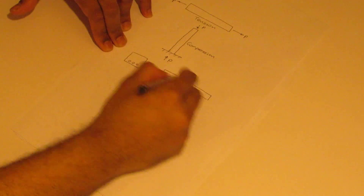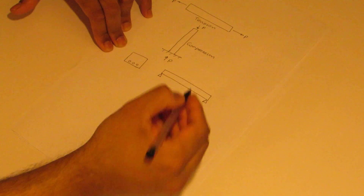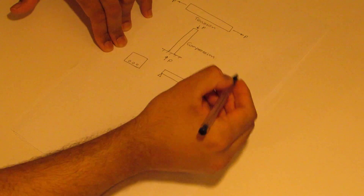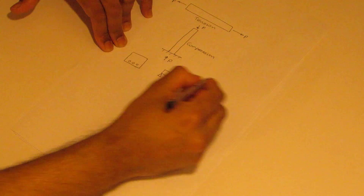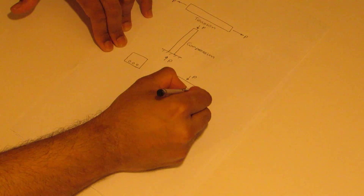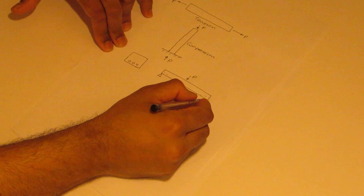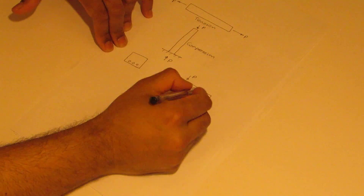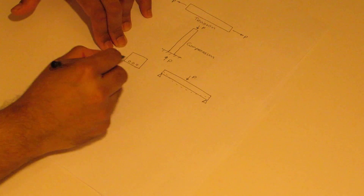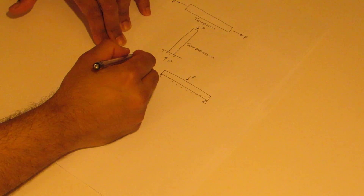If you take a simply supported reinforced concrete beam and you apply a load P here, it would try to bend like this. And the bottom surface goes into tension and the top surface will go into compression. Hence we use rebar at the bottom and concrete at the top.